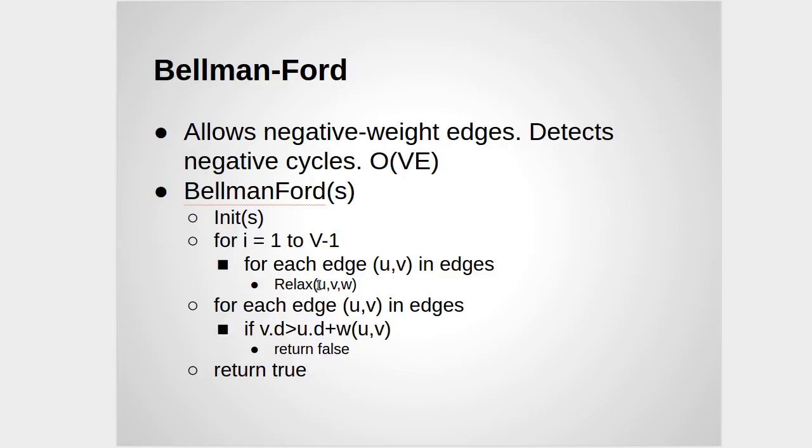Given these two for loops, it's fairly easy to see how we get this order. This is an order V loop. This is an order E loop. And since they're nested, the whole thing is order V times E.